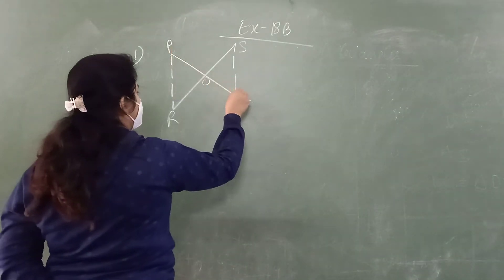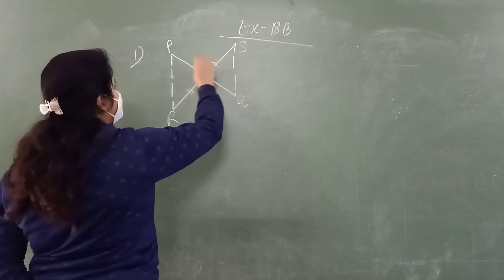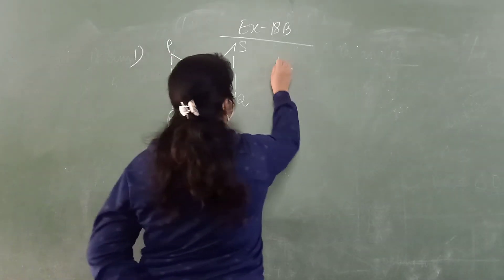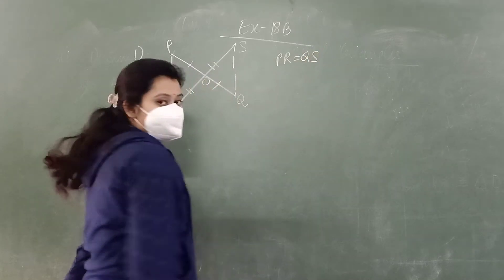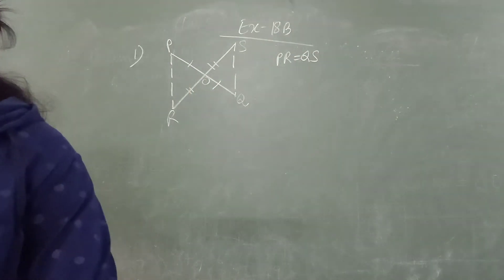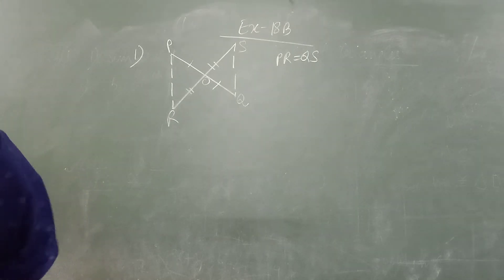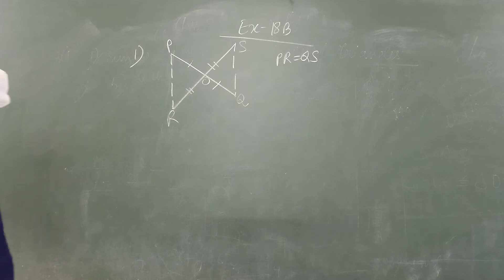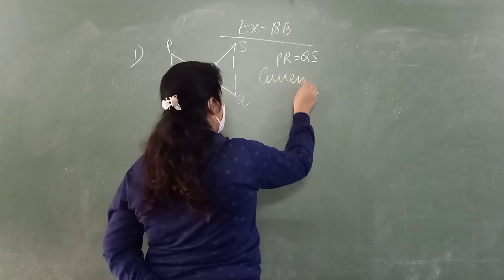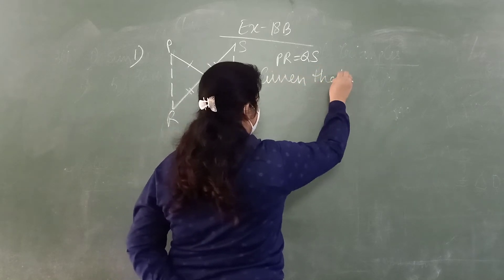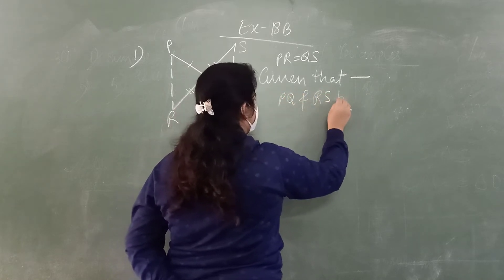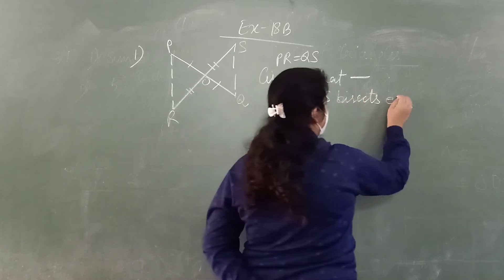It is given that PQ and RS bisect each other. Bisect means divide into 2 equal parts. And prove that PR is equal to QS.